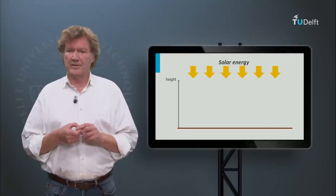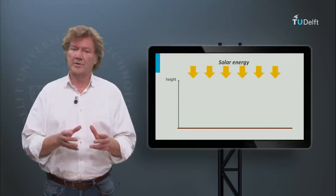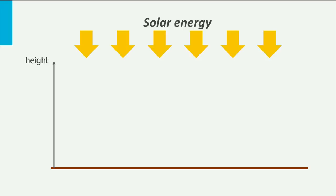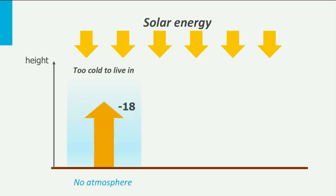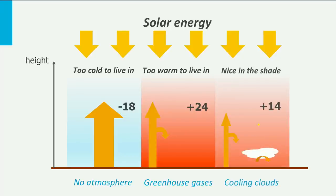To get a feeling for the significance of the different components of the energy balance, you can calculate the temperature on the Earth assuming different compositions of the atmosphere. If there is no atmosphere, the mean temperature would be around minus 18 degrees Celsius. If you include the greenhouse gases of today's atmosphere, it would increase to plus 24 degrees. And if you also take clouds into account, it becomes plus 14 degrees. So while greenhouse gases are needed to keep the Earth from freezing, clouds are there to keep it comfortable.